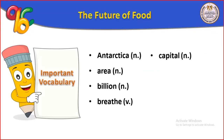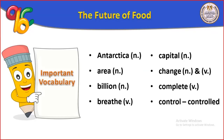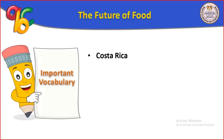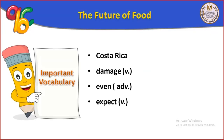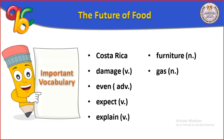Capital letter. Change (يغير أو تغيير). Complete (يكمل). Control (يتحكم), past tense controlled. Costa Rica is a city in Brazil. Damage (يحطم). Explain (يوضح). Furniture (أساس). Gas. Government (حكومة). Helpful (خدوم).